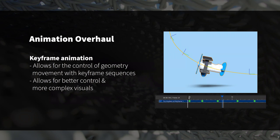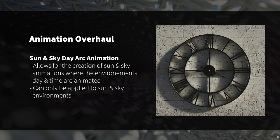If you're already familiar with using keyframes in other programs, KeyShot 10's keyframe animation should be pretty easy to jump into. The sun and sky day arc animation is another great update — it allows you to create animations where the environment's daytime is animated, essentially simulating the passage of time over a determined period. This animation works specifically with sun and sky environments, so you'd need to either apply one from the environments tab or set your background as sun and sky in the HDRI editor.